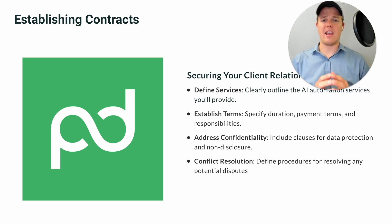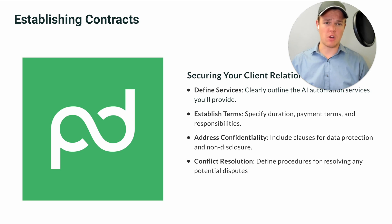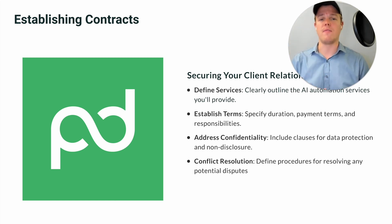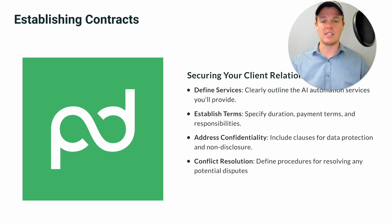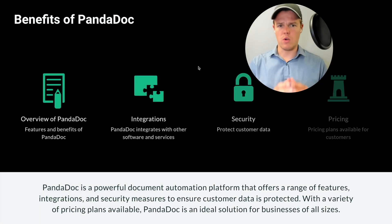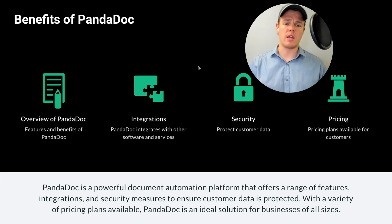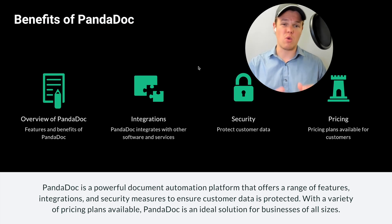Since we can't offer legal services here, we'll define the four main things you want to make sure are in your contract: define the services associated, establish the terms, duration, and payment, address the confidentiality — most of the times when you're accessing the backend of a business you want to ensure them their data is safe — and finally make sure you have some type of conflict resolution clause. Consult with a lawyer. PandaDoc allows a lot of integrations, has high security, and you can start with PandaDoc for completely free.